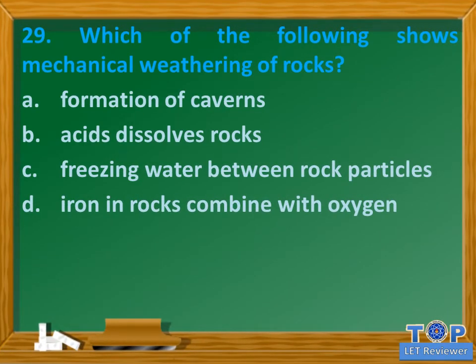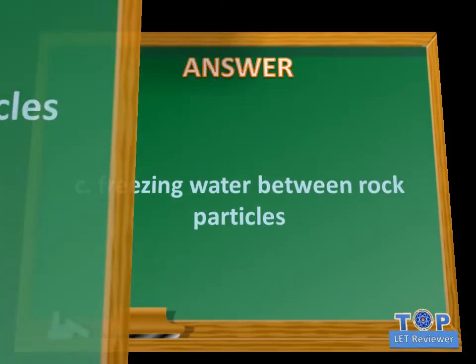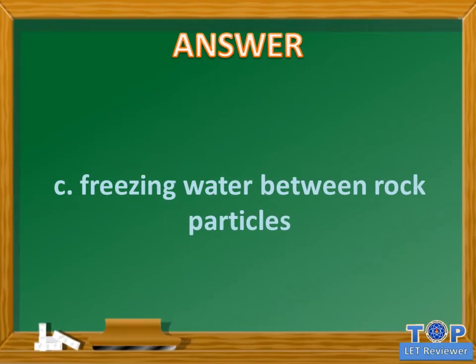Question number 29. Which of the following shows mechanical weathering of rocks? A. Formation of caverns. B. Acids dissolve rocks. C. Freezing water between rock particles. D. Iron in rocks combine with oxygen. Answer: C. Freezing water between rock particles.